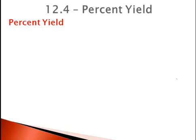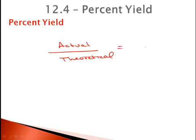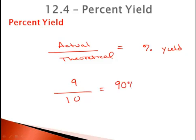So the percent yield — we're going to compare our actual yield to our theoretical. This is going to give us our percent yield. It's very similar to if you were to take a quiz and you were theoretically supposed to get 10 points, and you actually got 9 — your yield on that would be 90%.